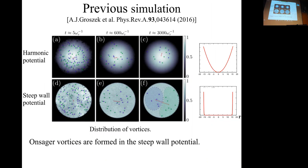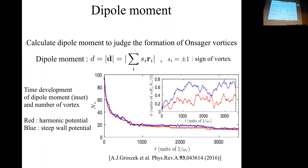First, I introduce the previous simulation. This is a process to calculate the dynamics of vortices in a condensate trapped by harmonic potentials like this, or trapped by steep wall potentials like this. Blue points and green points mean positive and negative vortices. From this, the Onsager vortex is formed in the steep wall potential. They calculate the dipole moment to judge the formation of the Onsager vortex. The dipole moment is defined by this equation, where S_i is the sign of the vortex and R_i is the position vector of the vortex.